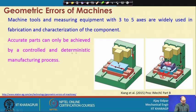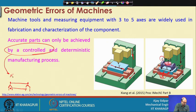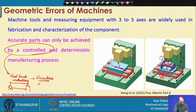An accurate part can only be achieved by a controlled or deterministic manufacturing process. Control means having feedback controllers - if you are moving from one location to another, the feedback system confirms exactly where your tool has moved. These are the encoders: rotary encoders find out how many rotations there are, and linear encoders directly calculate the linear motion. Those are the feedback controllers.